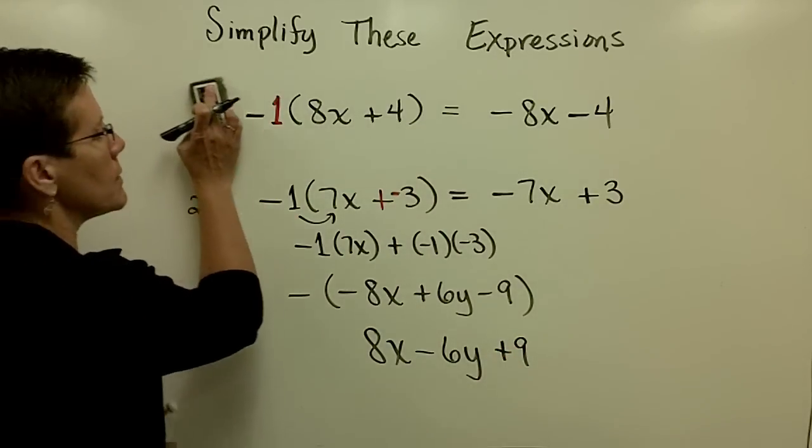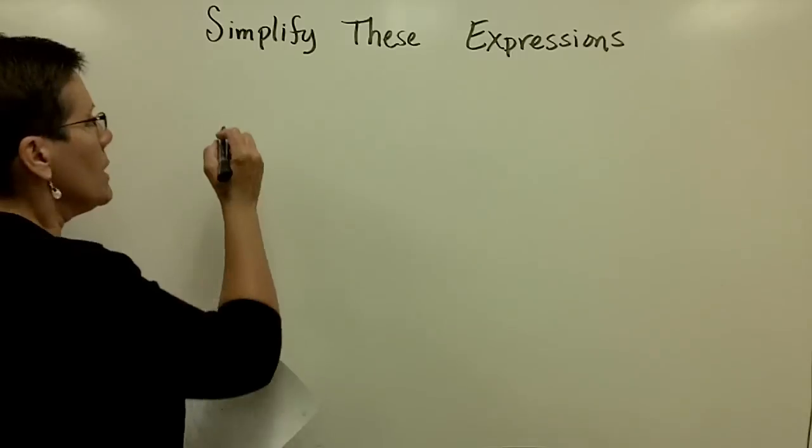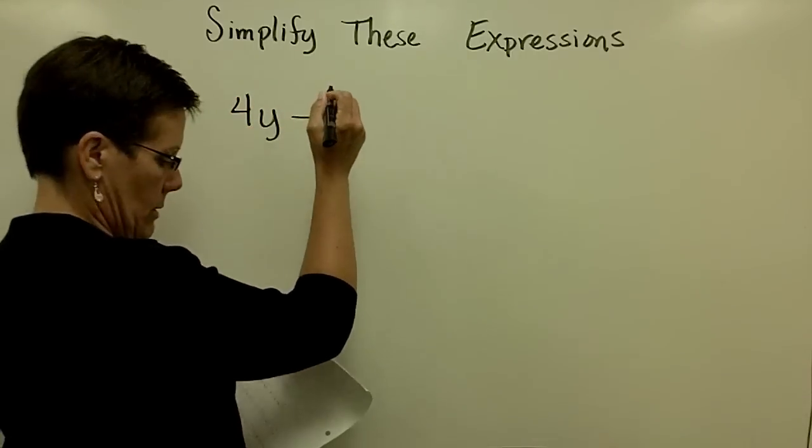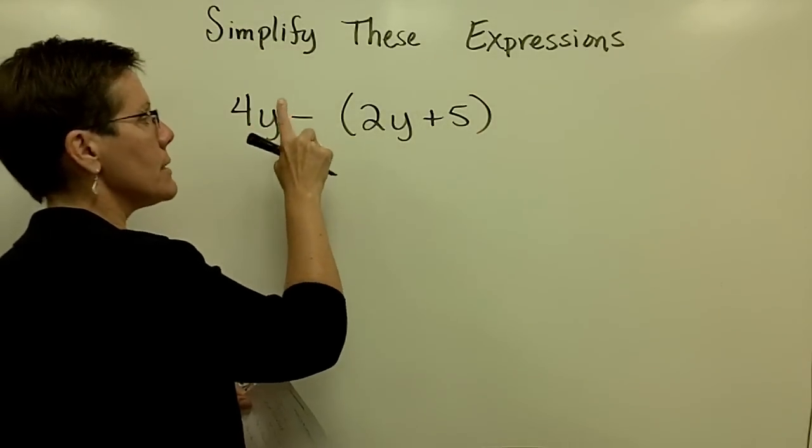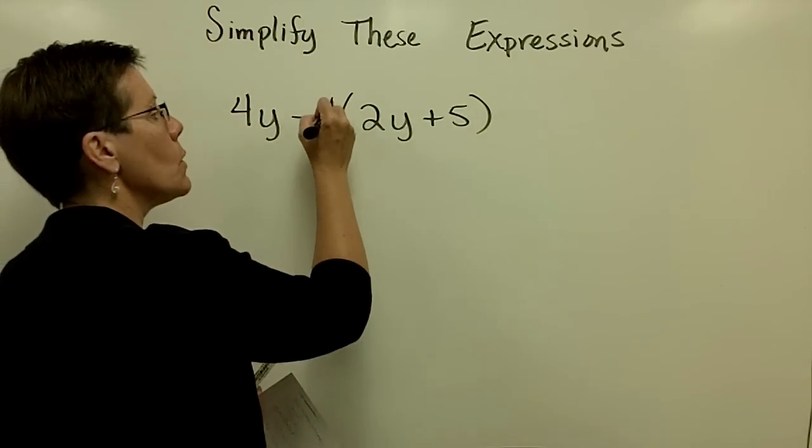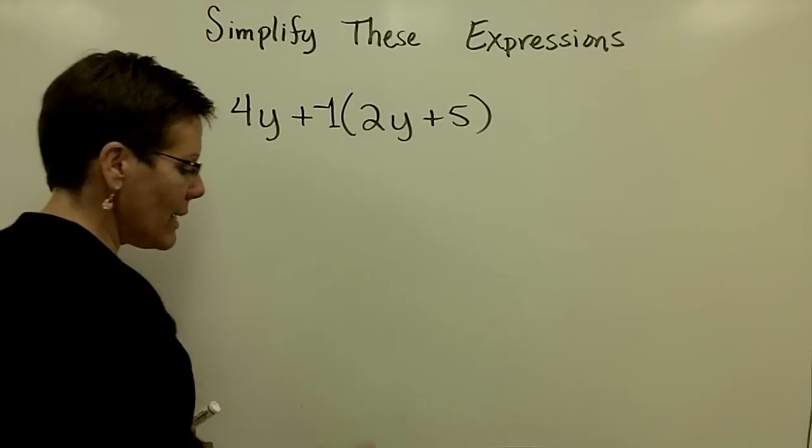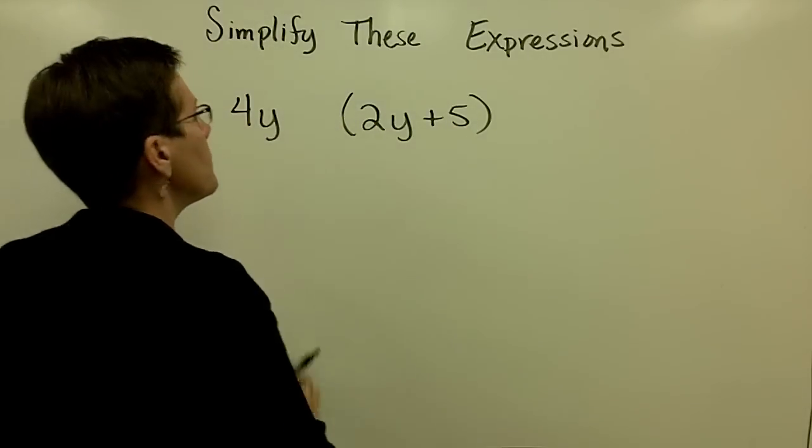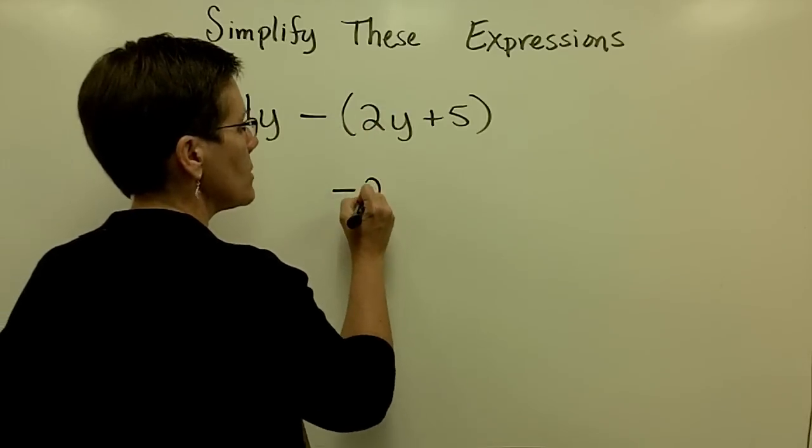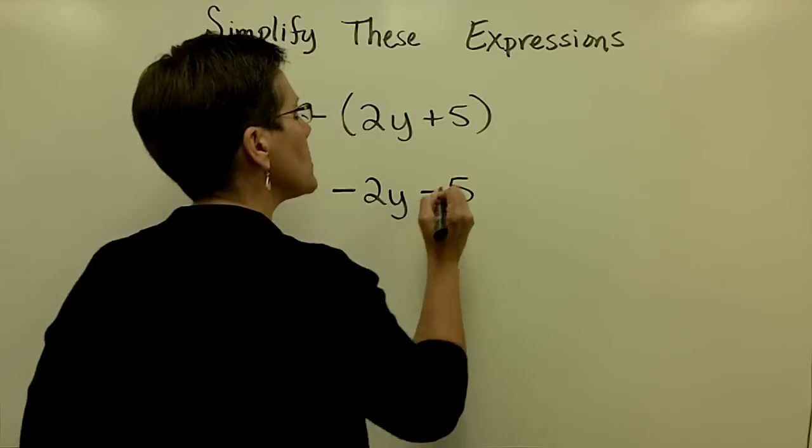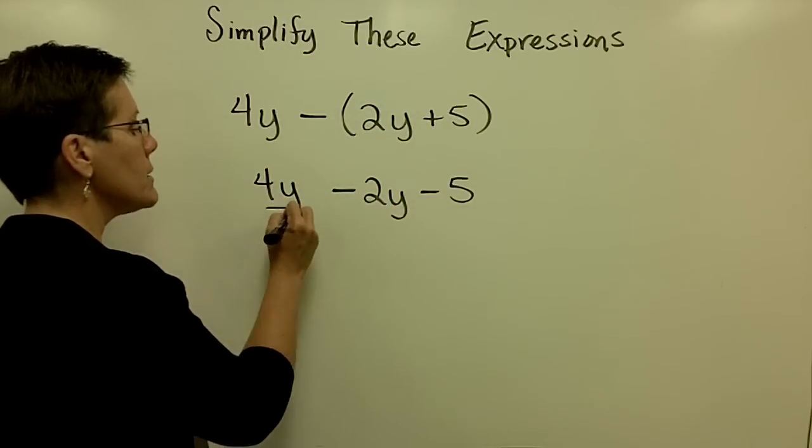Now if we put that in context with a problem where we don't just have a negative sign in front of the parentheses, we have a term in front of that. So let's say I have 4y minus 2y plus 5. When I ask you 4y to take away all of that, it's like I'm asking you to add the opposite of every one of those. So again, when you see this minus sign in front of a set of grouping symbols, make that 2y a minus 2y. Make that 5 a minus 5. Drop the parentheses because you have distributed the negative 1 times those and you are ready to combine your like terms.